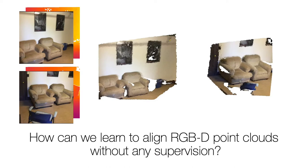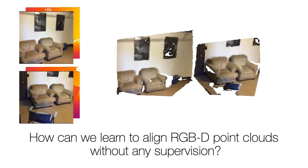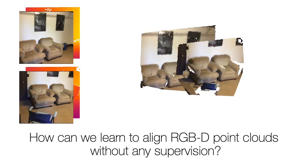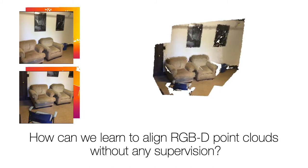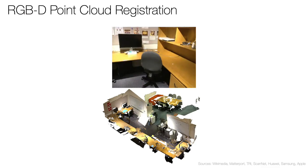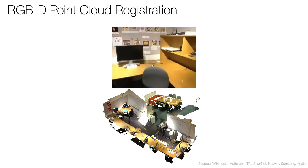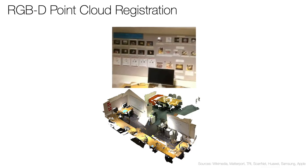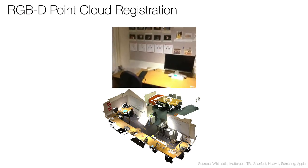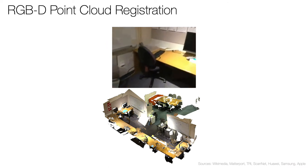Given two RGBD images of the same scene, we would like to align them into a single whole. Specifically, we're interested in learning this without relying on any pose or correspondence supervision. This is called RGBD point cloud registration and it's a core component of SLAM and Structure from Motion.